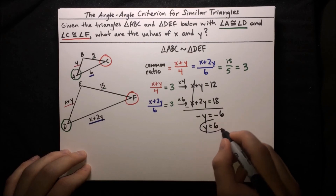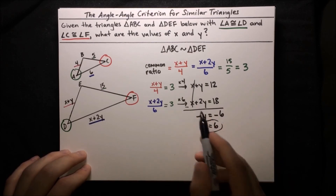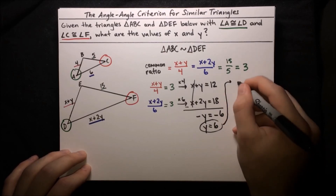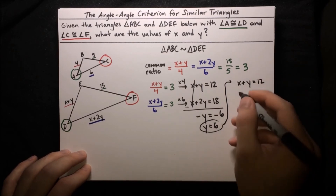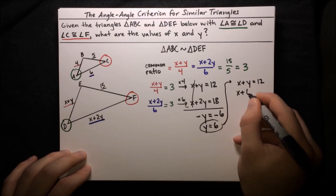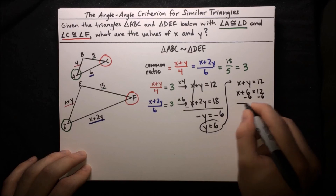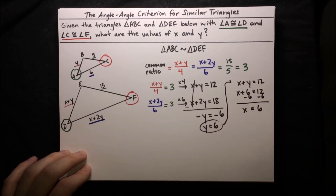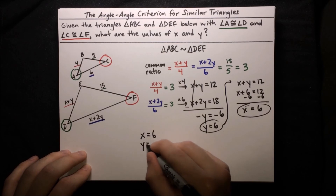Now that we know Y equals 6, we can back substitute into the equation X+Y = 12. Plugging in Y = 6: X + 6 = 12, so X = 6. X and Y are both 6. That is our final solution: X equals 6, Y equals 6.